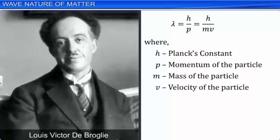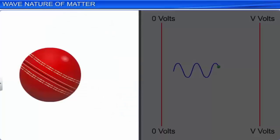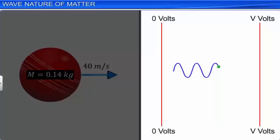The dual nature of matter is evident in the De Broglie equation. The left-hand side of the equation has the attributes of a wave form, while on the right-hand side are the typical attributes of a particle. Let us calculate the De Broglie wavelength of a cricket ball of mass 0.14 kilogram moving with the velocity of 40 meter per second, and an electron of mass m and charge e accelerated through a potential V, and compare the impact of De Broglie on matter.